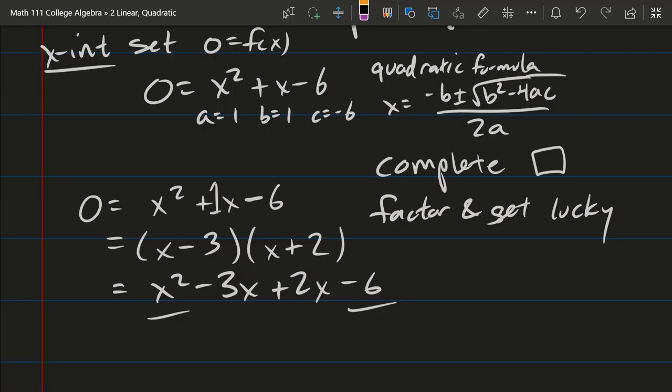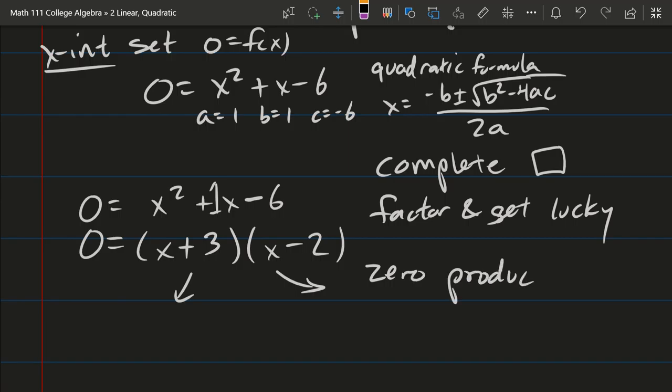First term x squared, inside minus 3x, outside plus 2x. The last is minus 6. The x squared and minus 6 better work because that's where I got these numbers from, but you can see that the negative and positive need to be switched around. I need plus 3x minus 2x to give me positive 1x. So we go ahead and edit those signs, and now this does in fact reduce down to the original.